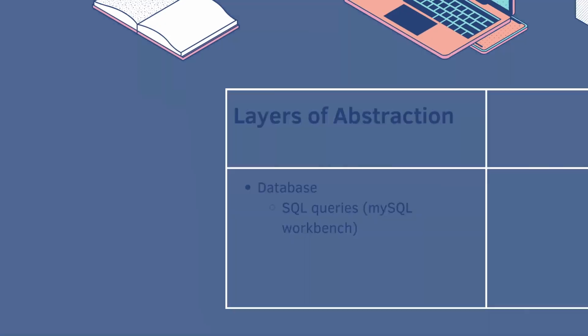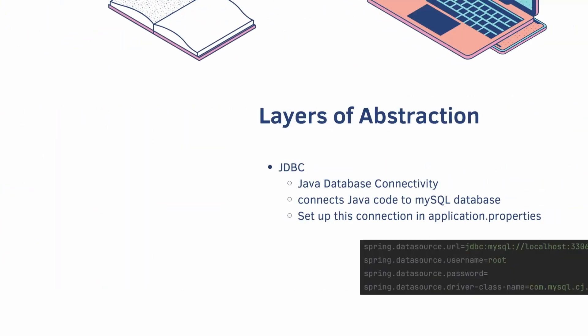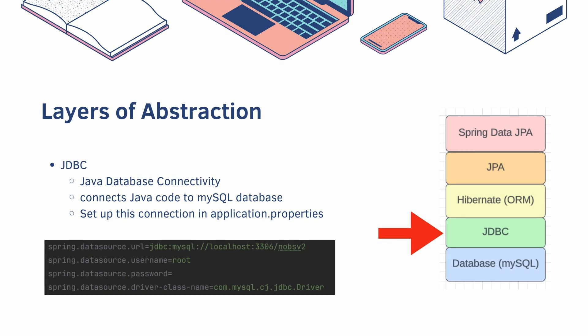Spring Boot has an entire stack of abstraction. Let's start at the bottom with the database. The database is SQL, and we can interact with it directly using SQL queries like we do in MySQL Workbench. One layer up is JDBC, or Java Database Connectivity. This connects our Java code to a MySQL database. If you remember from the first video, we set up this connection in application.properties — datasource.url is equal to JDBC, and our driver is a JDBC driver. This acts as our physical connection between Java and SQL.